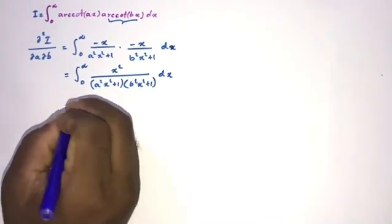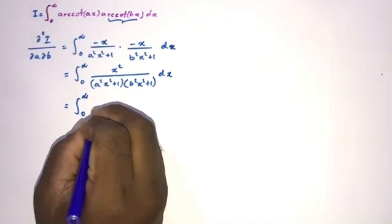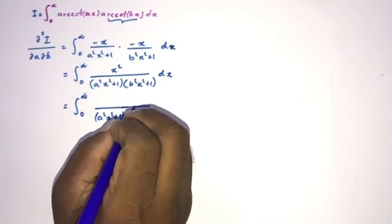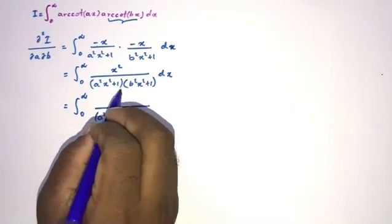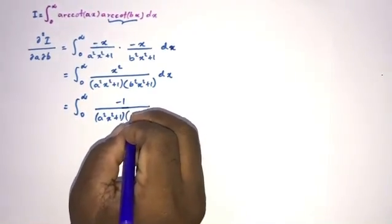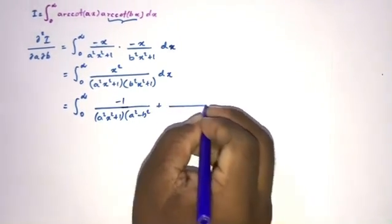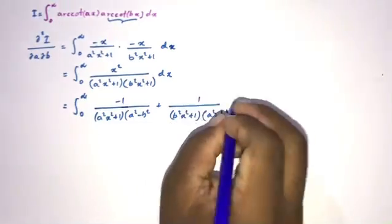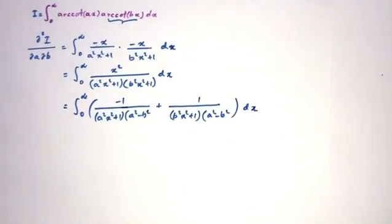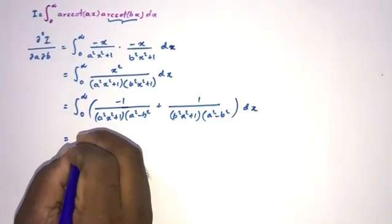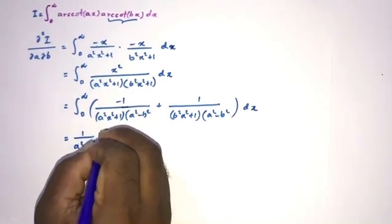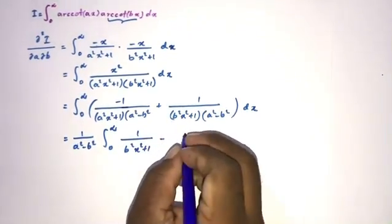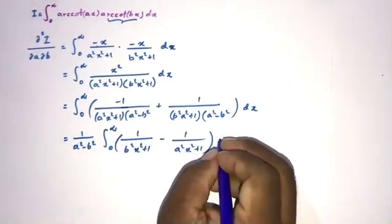Now, partial fraction decomposition. We write the integral from 0 to infinity. For the factor (a²x² + 1), plugging in x² = −1/a² gives a coefficient of −1/(a² − b²). For the factor (b²x² + 1), same process gives 1/(a² − b²). Taking (a² − b²) as a common factor, we get 1/(a² − b²) times the integral from 0 to infinity of [1/(b²x² + 1) − 1/(a²x² + 1)] dx.